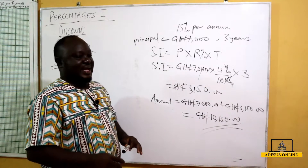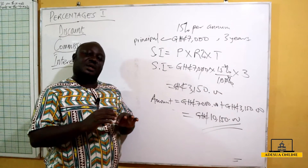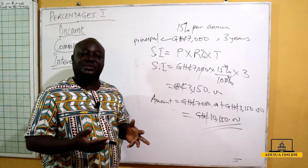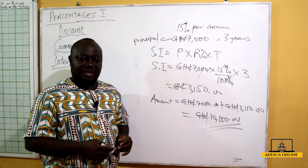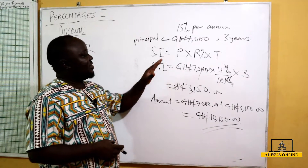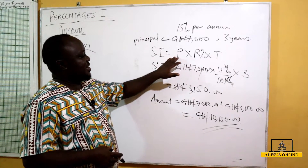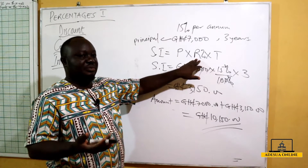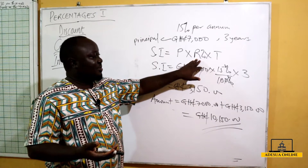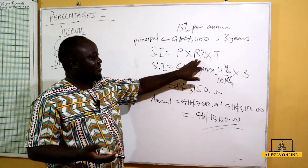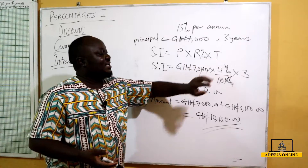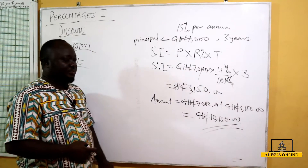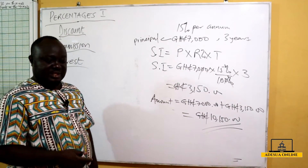So that's how simple interest works. Normally we have three components: the principal — the money you start with — the rate given per annum, and the time. That's simple interest.